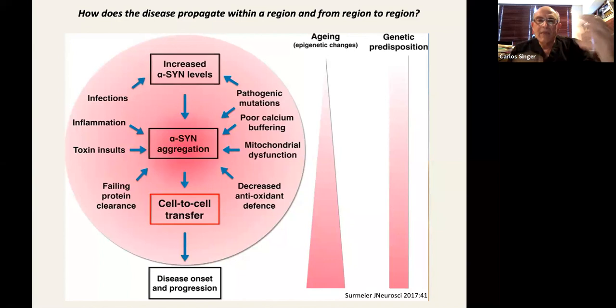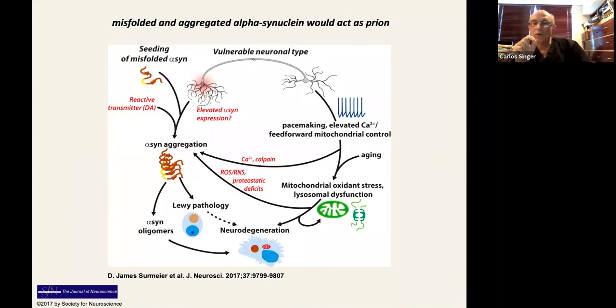That aggregation, that misfolded and aggregated synuclein transmits its message directly to another cell in what's called cell-to-cell transfer. In other words, misfolded and aggregated alpha-synuclein would act as a prion.